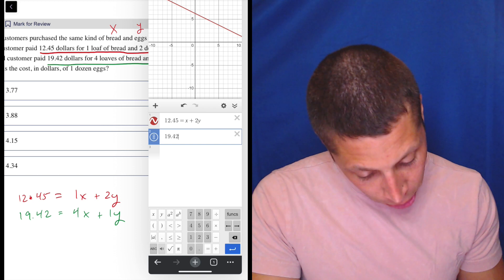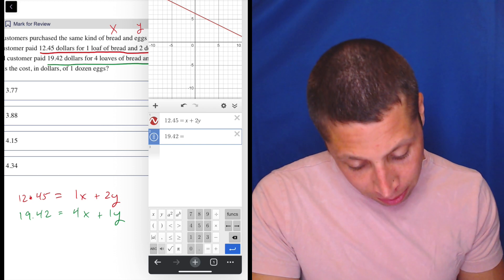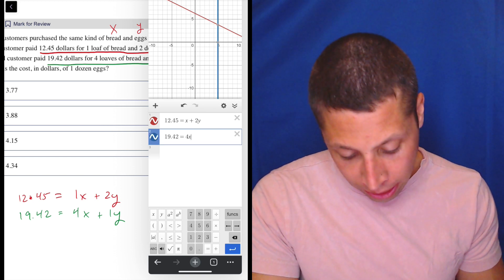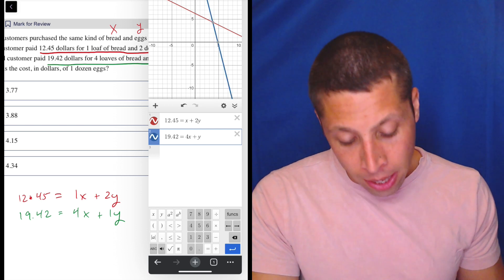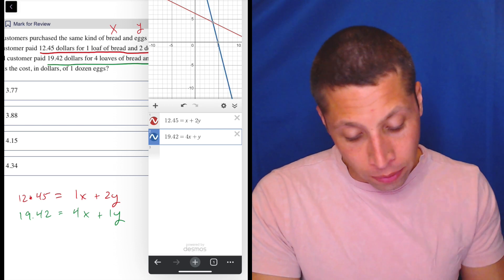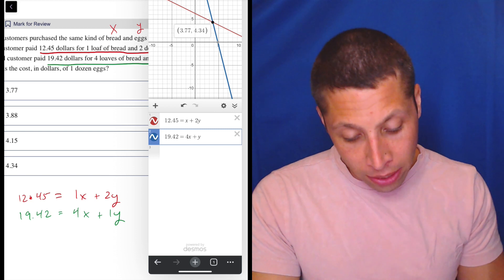One thing about this Desmos on the iPad is it makes me wait a second before I can hit another button. And so I have to go slow. And what do you know? There it is. There's my point of intersection. 3.77, 4.34.